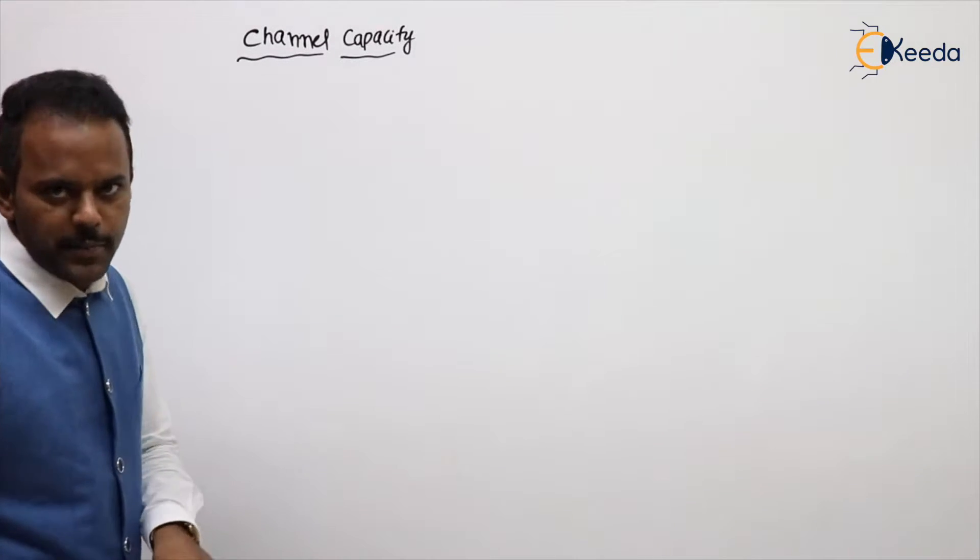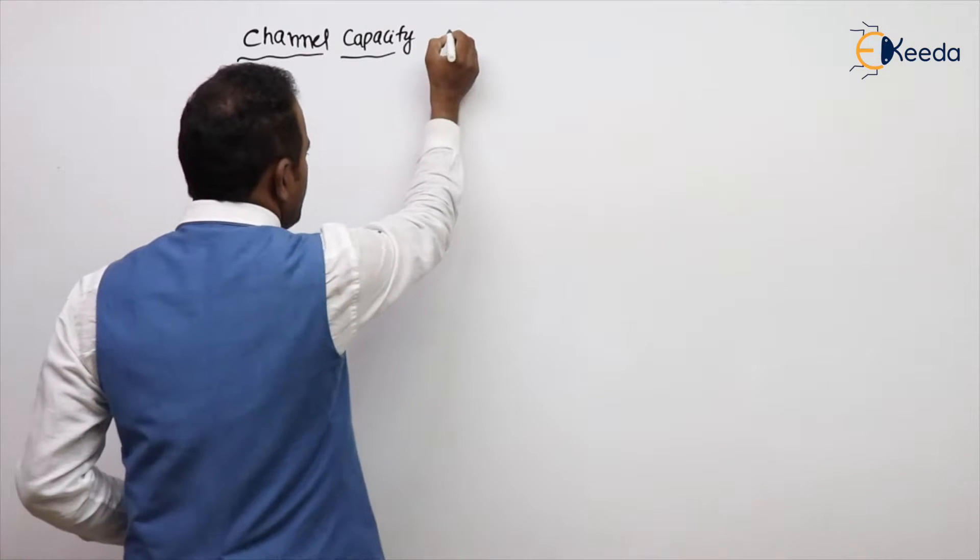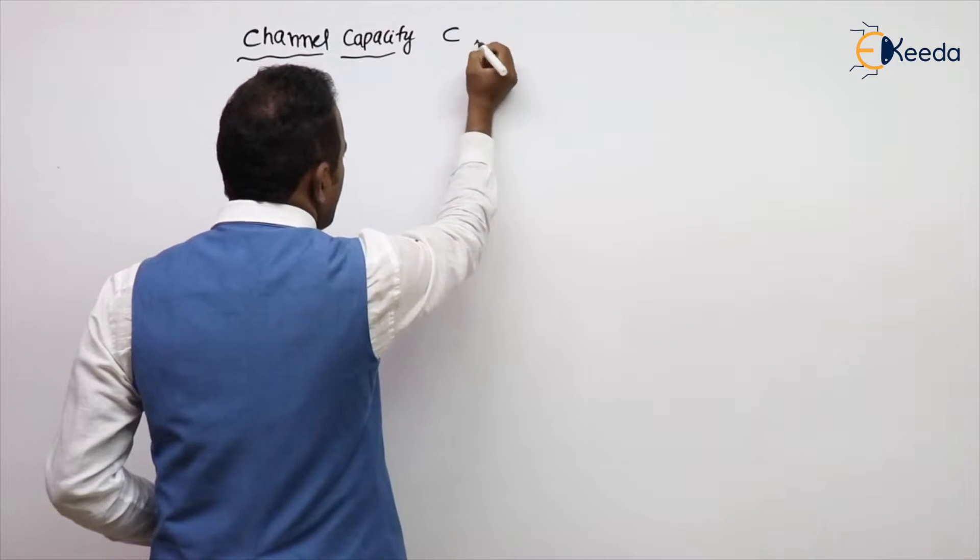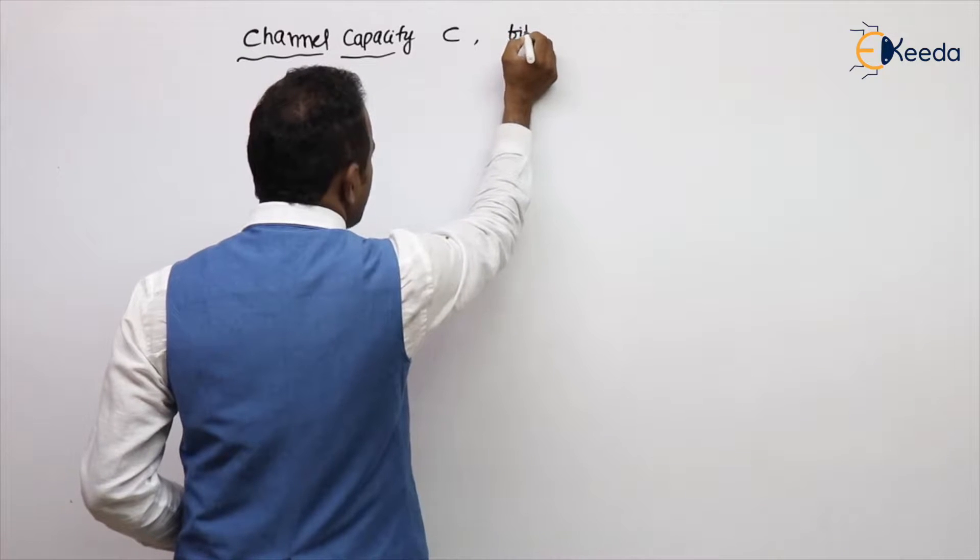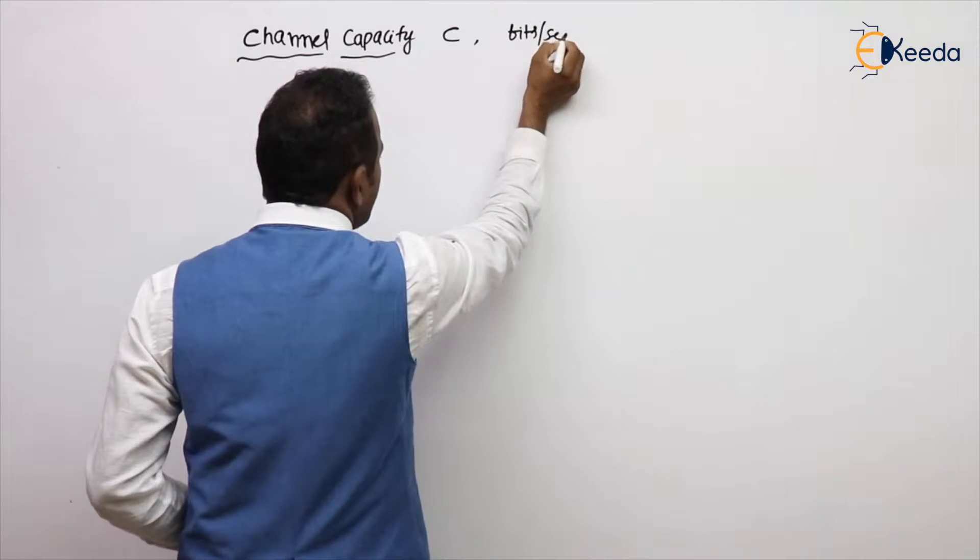The next point is channel capacity. Channel capacity is denoted by C. What are the units for this channel capacity? Bit per second.